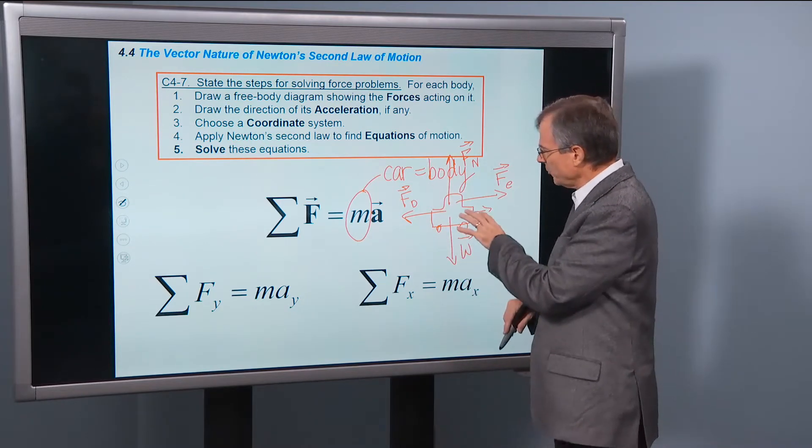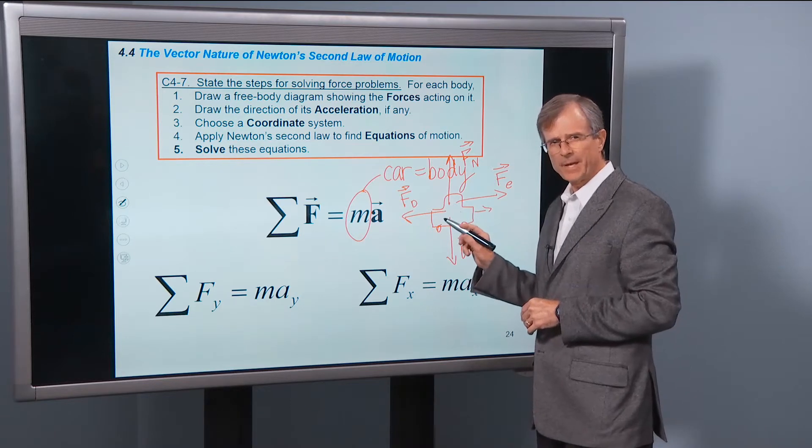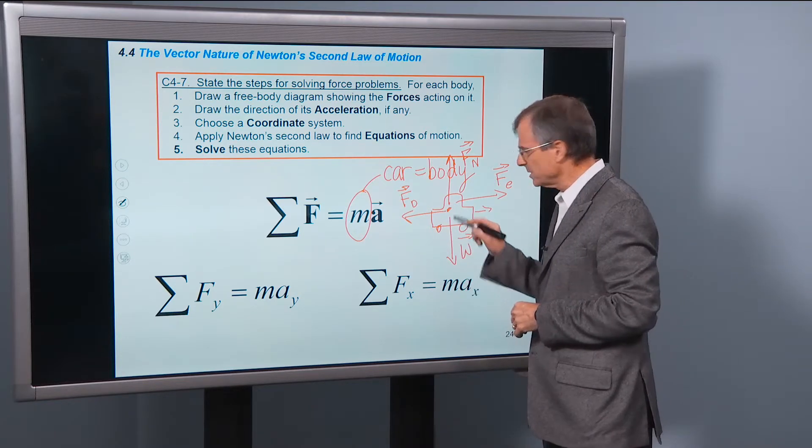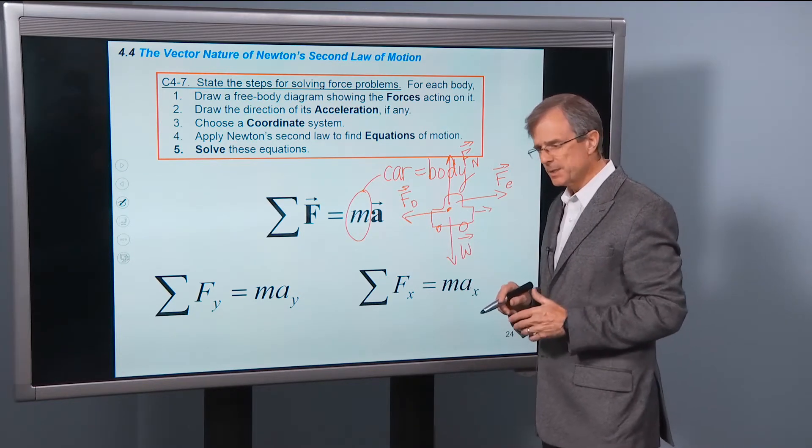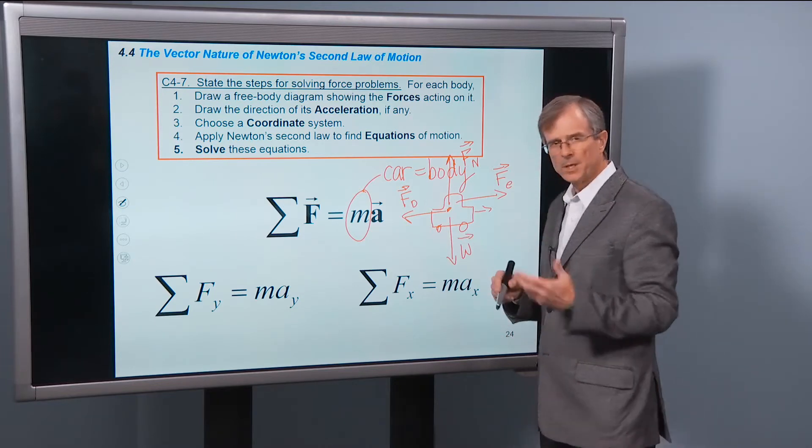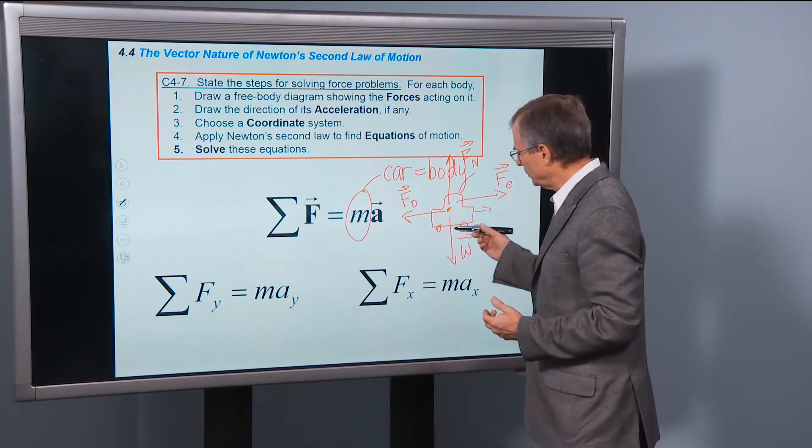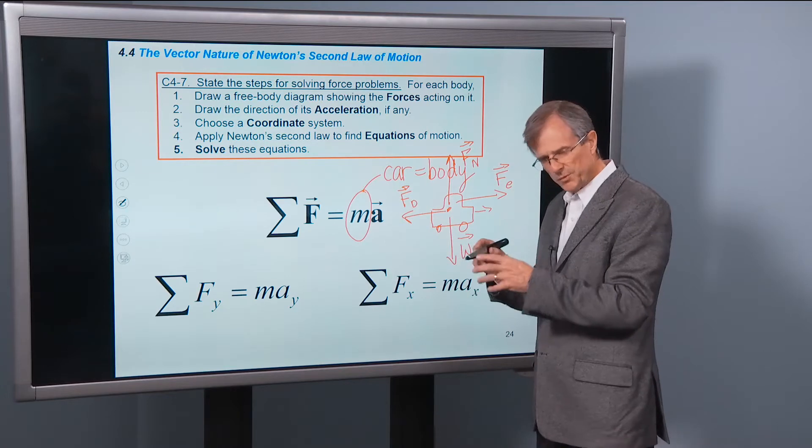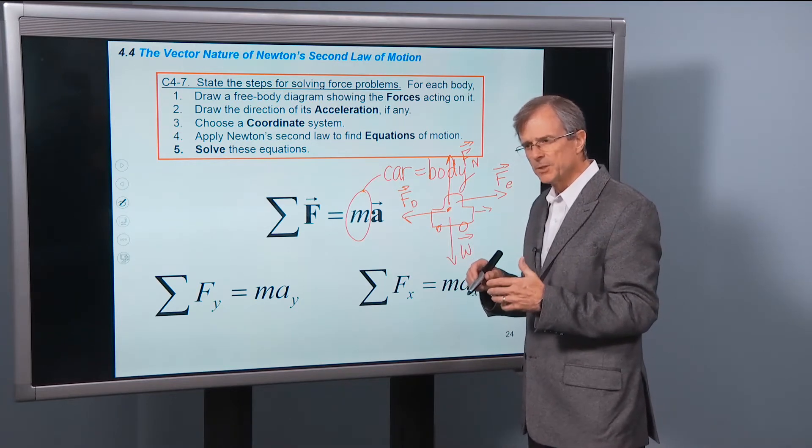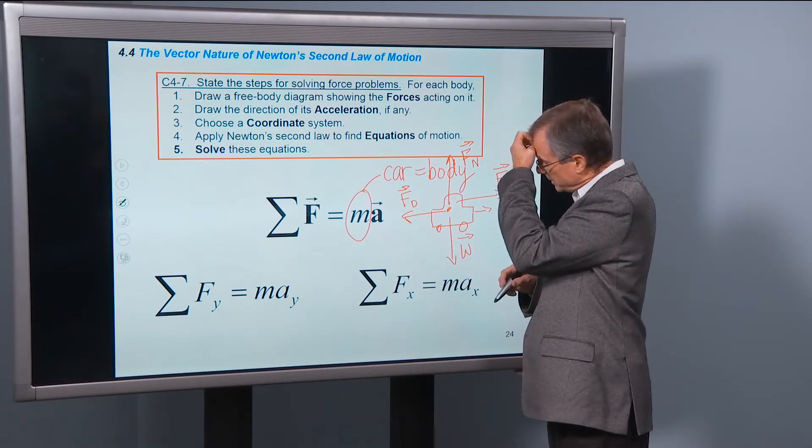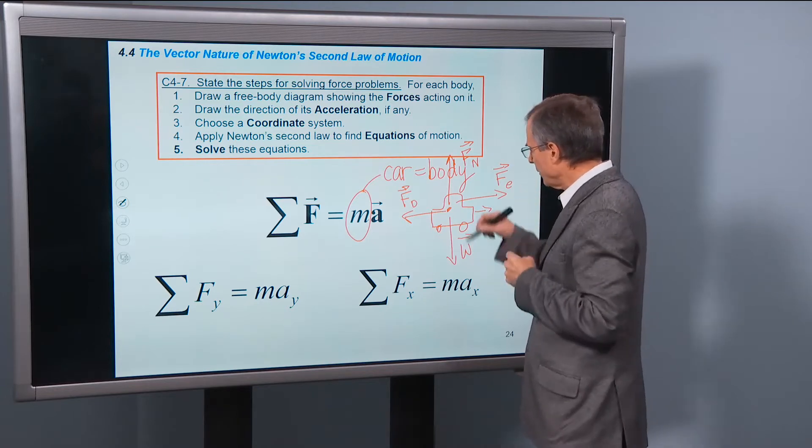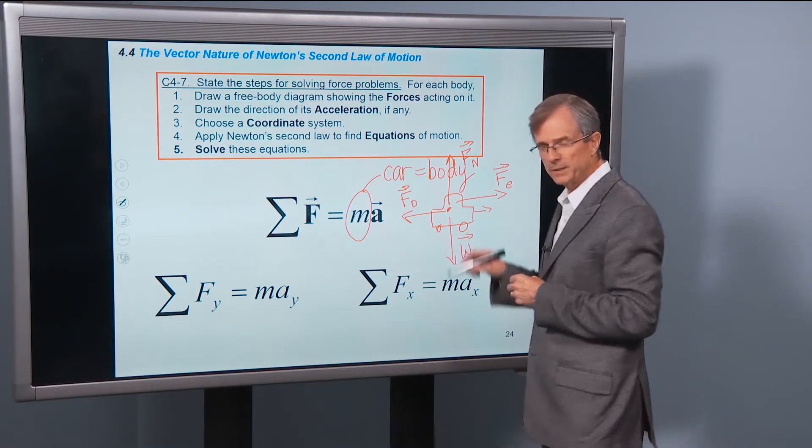And we normally draw those free body diagrams with the tails of the vectors all pretty much at the center of the body. And there are exceptions. When we want to start talking about torques, we'll put those forces where they actually occur on the car. But for now we can just put the tails of all of the vectors at the center of the body.